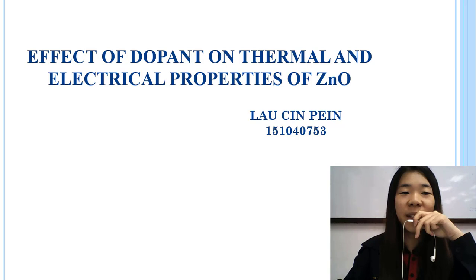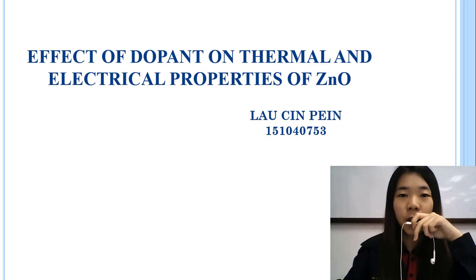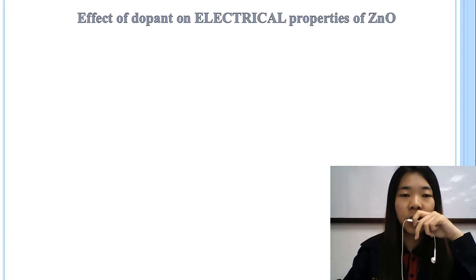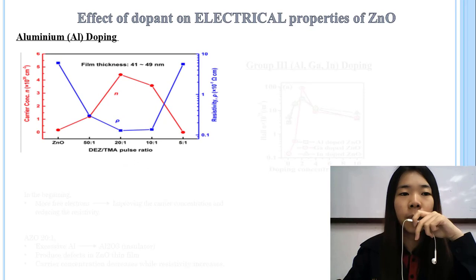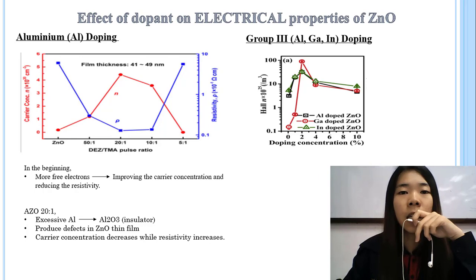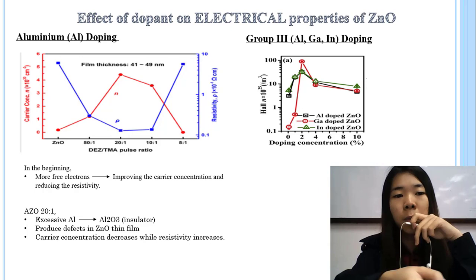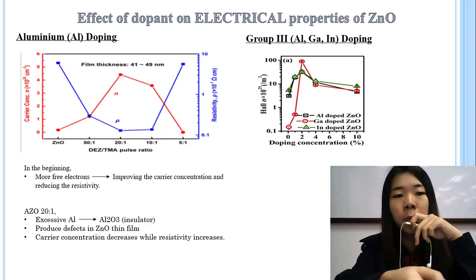Hi, good morning. I'm Lao Jin-Thing and today I'm going to present on the effect of doping on the thermal and electrical properties of zinc oxide. What is doping? Doping refers to the introduction of impurities into a semiconductor to manipulate its properties. For Group 3 doping, with aluminum doping, carrier concentration first increases until a point where it drops again. The increase is due to more dopant being introduced, raising carrier concentration and reducing resistivity. The drop is due to excess dopant leading to formation of insulating phases such as Al₂O₃, which decreases carrier conductivity.